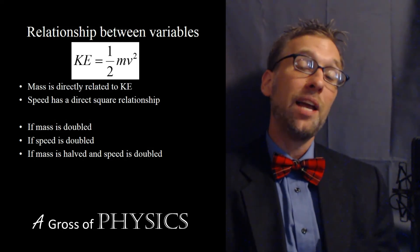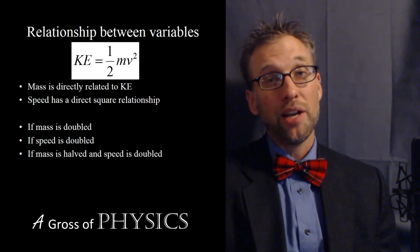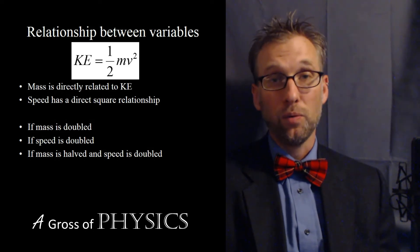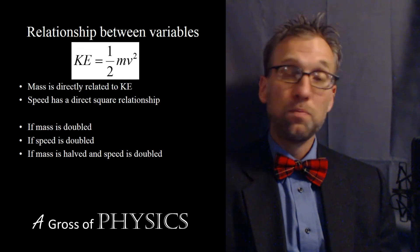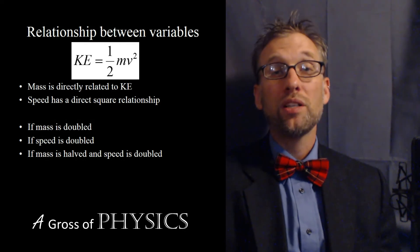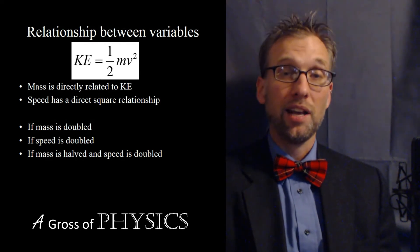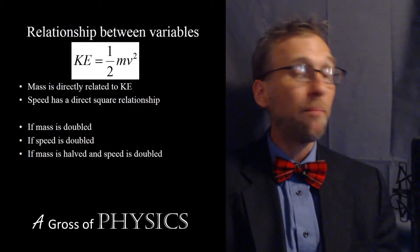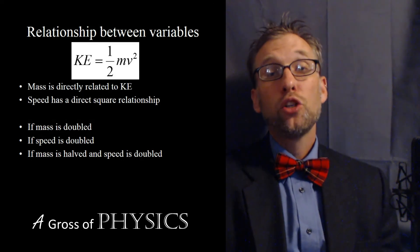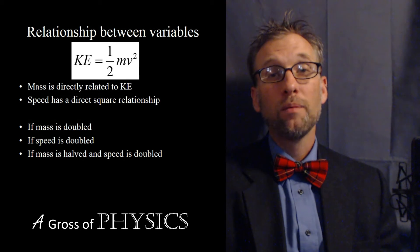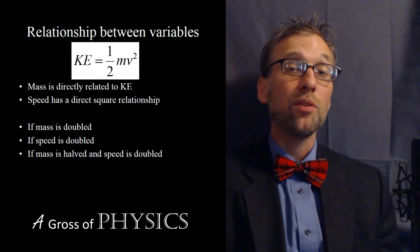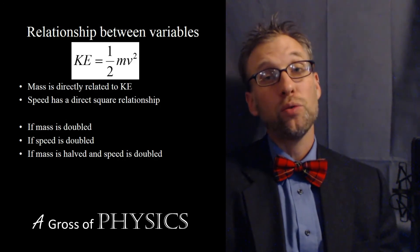If I were to double the mass of an object, I would put two for m, one for v, so two times one squared gets me two, so it would double. If I were to double the speed, mass would be one, the speed would be two squared, so one times four and it will be four times bigger. Finally, if we have the mass as one half and double the velocity, two squared times one half yields two. So if I were to halve the mass and double the speed, I would actually increase the kinetic energy two times.